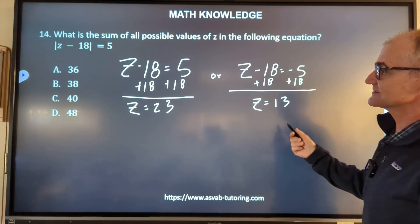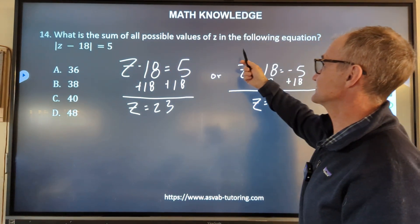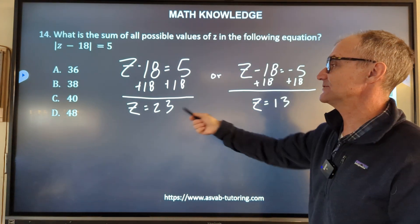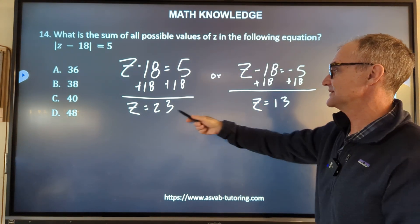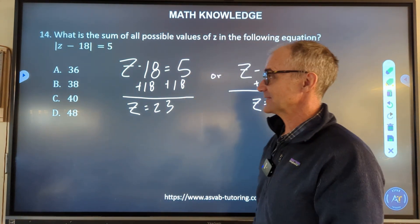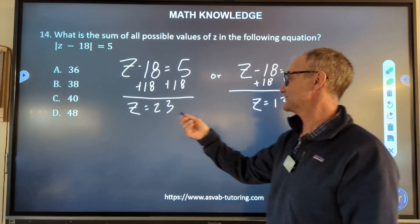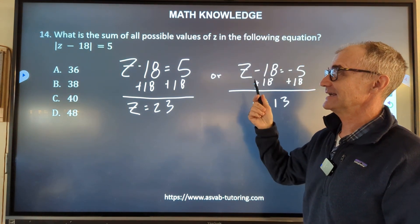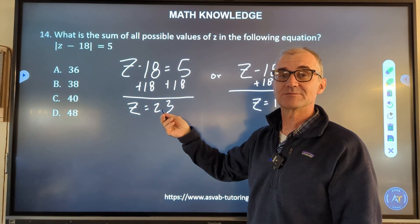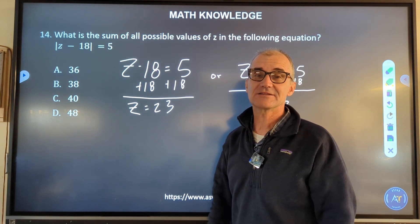And it doesn't ask you what the two solutions are, it says what is the sum of the solutions. So that means you got to add these two together. So it's really two problems in one. 36, there's your correct answer right there. A lot of times on problems like this, some of the solutions will be the 23 or the 13, and you'll end up getting it wrong even though you did the problem right, because you didn't read the problem completely and see that you got to add those two together.